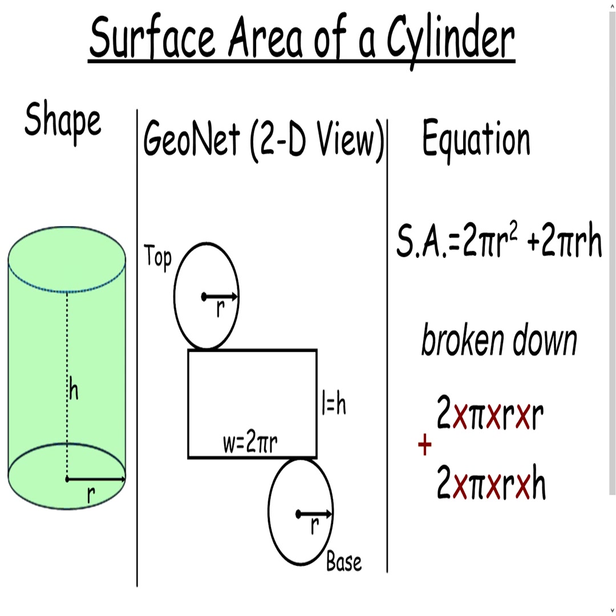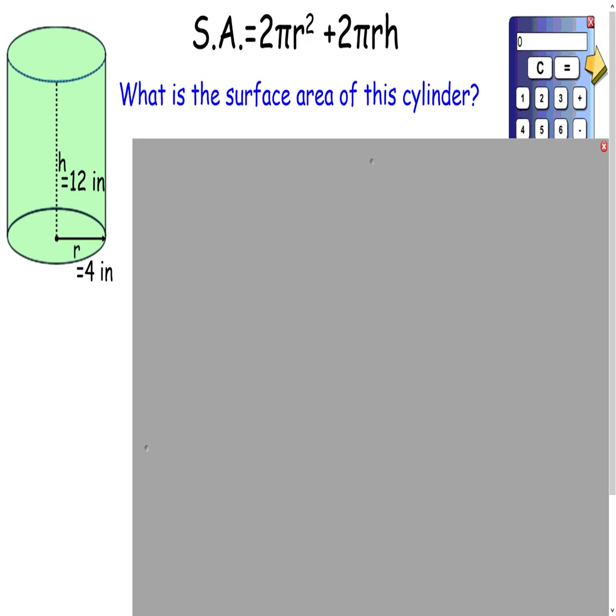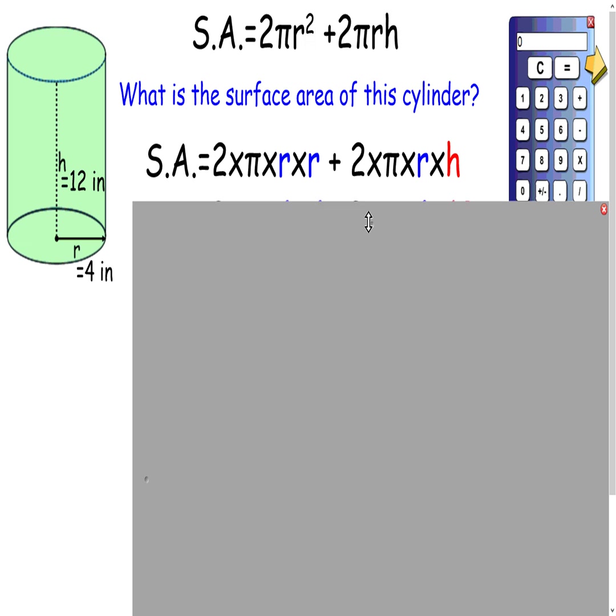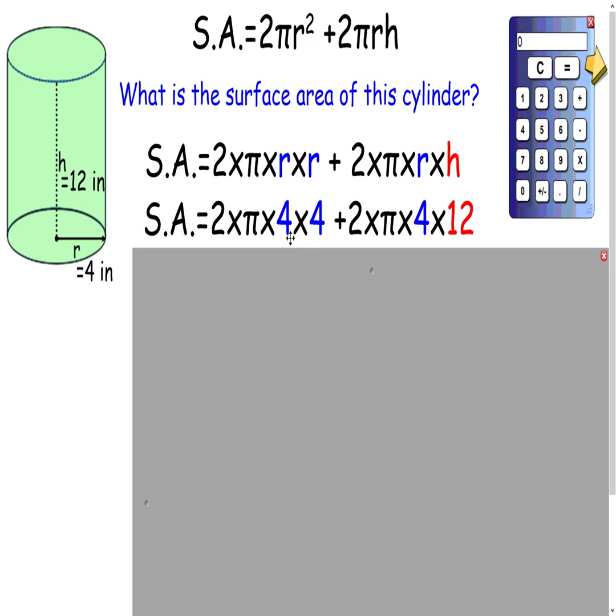So let's try a few example problems. Here's our cylinder, and it has a height of 12 inches and a radius of 4 inches. So we're going to take our formula, 2 pi r squared, plus 2 pi r h, and plug in our r of 4 and our h of 12.